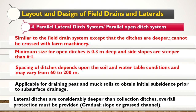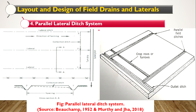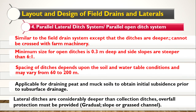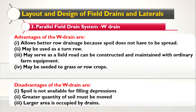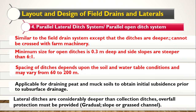The fourth type is the parallel lateral ditch system, also called the parallel open ditch system. It is similar to the parallel field drain system, but the ditches are of greater depth and cannot be crossed with farm machinery. This system can move both surface as well as subsurface water. The minimum size for open ditches is 0.3 meter and the side slopes are steeper than 6:1. Spacing should be 60 to 200 meter.